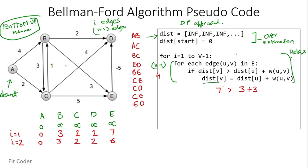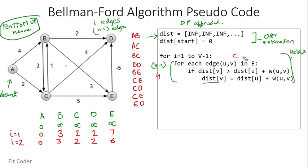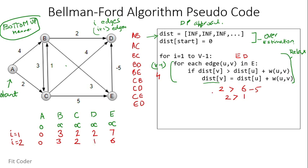Edge CB: distance of B (3) not greater than distance of C (2) plus CB (1) = 3, skip. Edge CD: distance of D (2) not greater than distance of C (2) plus CD (4) = 6, skip. Edge CE: distance of E (6) not greater than distance of C (2) plus CE (5) = 7, skip. Edge ED: distance of D (2) is greater than distance of E (6) plus ED (minus 5) = 1, so distance of D becomes 1. After the second cycle: A=0, B=3, C=2, D=1, E=6.